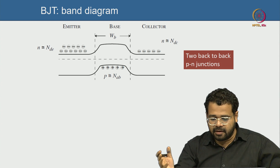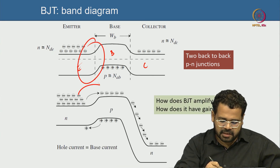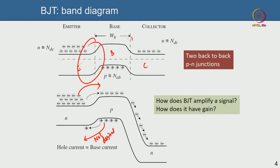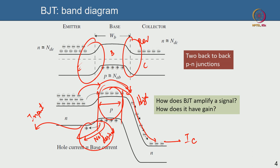In a BJT, there are two p-n junctions back to back: emitter, base, and collector. The emitter-base junction is forward biased so electrons are injected from emitter to base; holes injected from base to emitter are an undesired component. The collector junction is reverse biased, sweeping electrons that arrive into the collector current. To minimize back-injected holes, the emitter doping ND should be much larger than the base doping NB, giving good injection but poor back-injection.